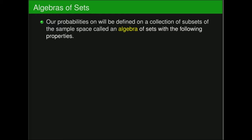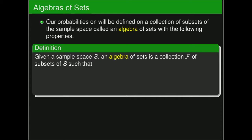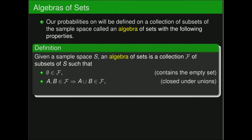This collection of subsets has certain properties that mathematically we call an algebra. If we have a sample space S, an algebra of sets is a collection of subsets, script F, such that the empty set is contained in it. If A and B are elements, then the union of those two events is also an outcome. And if an event A is in the collection, then its complement A-bar is also in the collection.